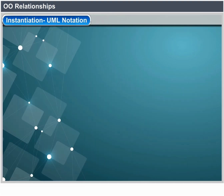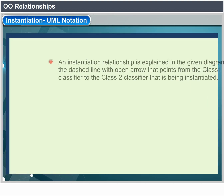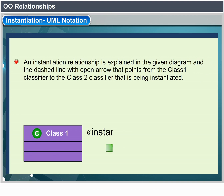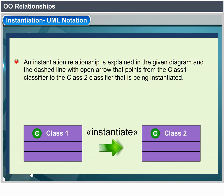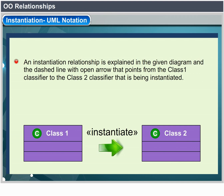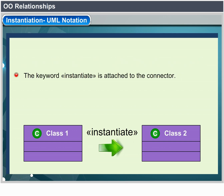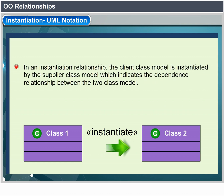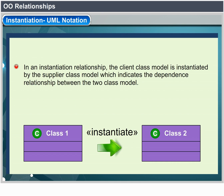An instantiation relationship is displayed in a diagram as a dashed line with an open arrow pointing from the classifier performing the operation to the classifier being instantiated. The keyword 'instantiate' is attached to the connector. In this relationship, the client model element is instantiated by the supplier element and is therefore dependent on it.